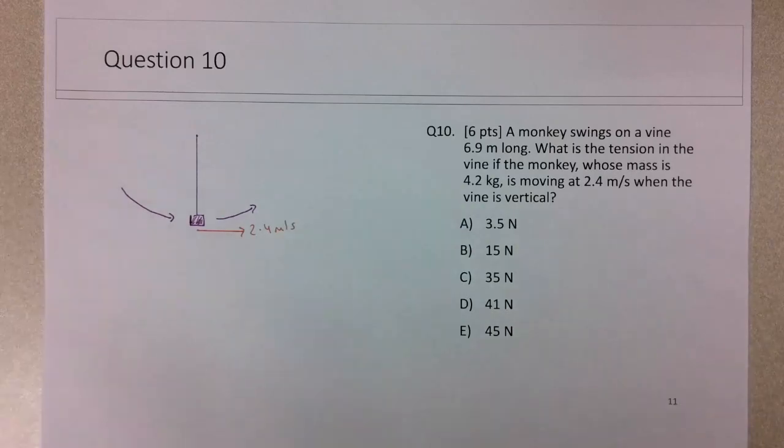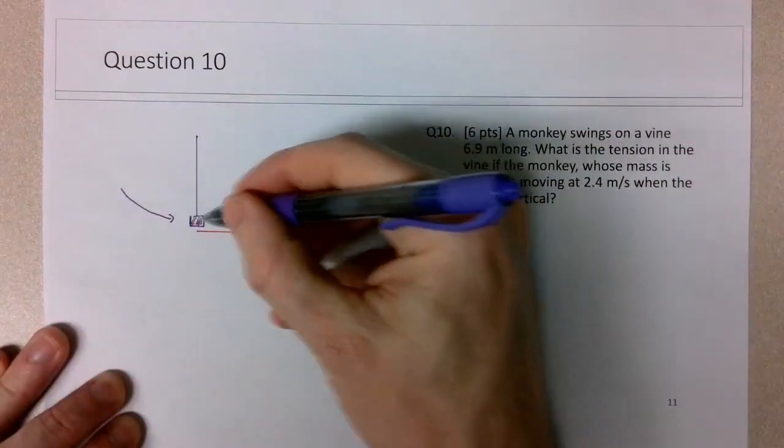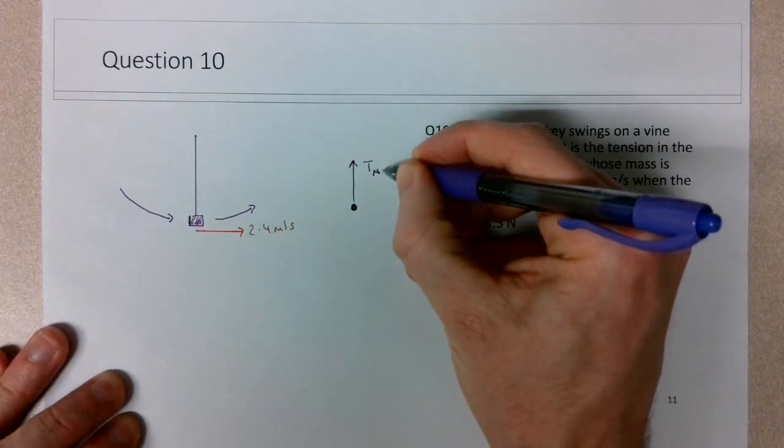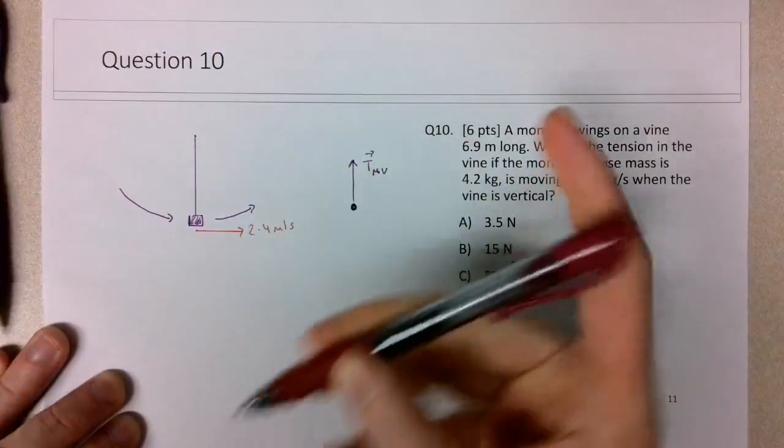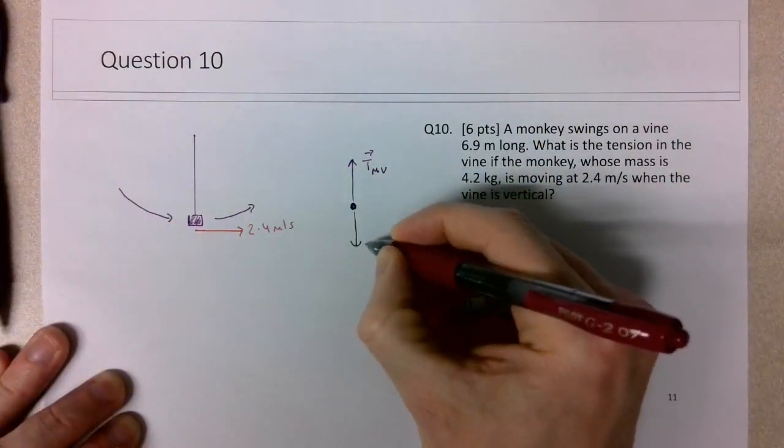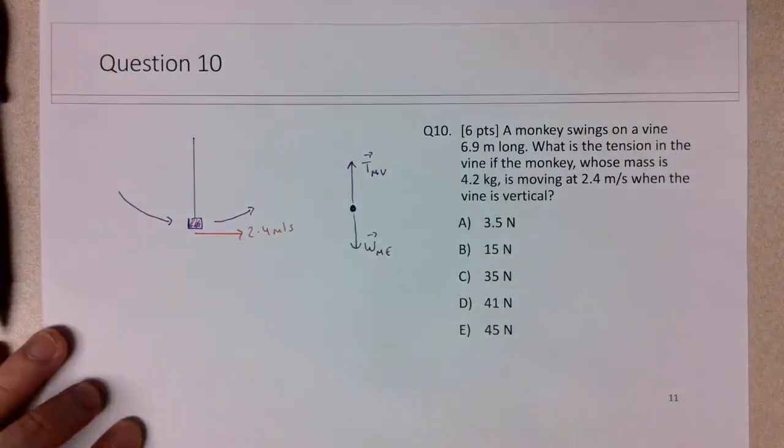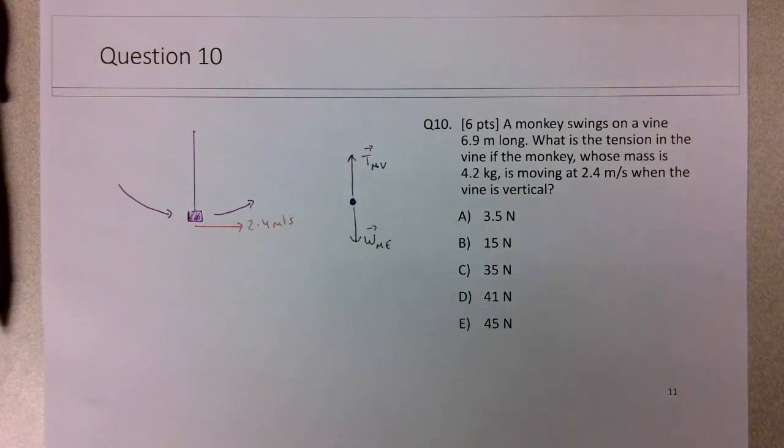So thinking about the free body diagram for the monkey at the bottom of the circle, there is a tension force on the monkey by the vine, and there is a weight force on the monkey by the earth. The sum of these two forces must be equal to the net force, and that net force is equal to mass times a, and this a in this case is the centripetal acceleration.